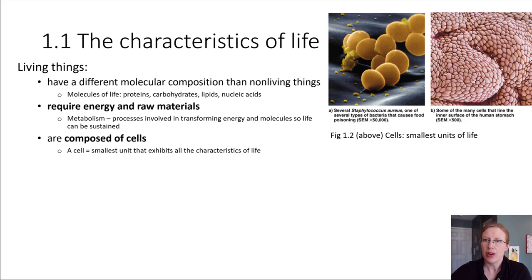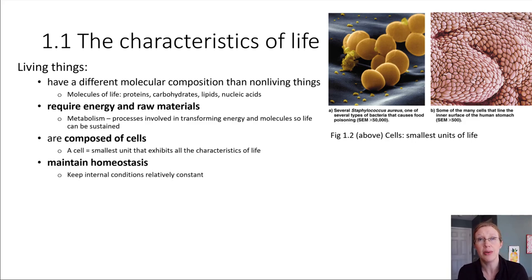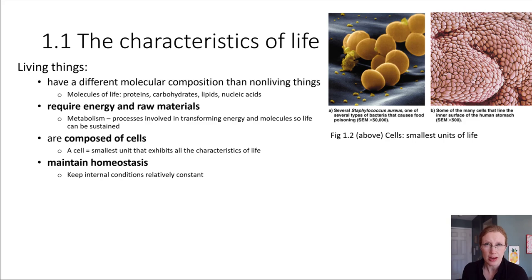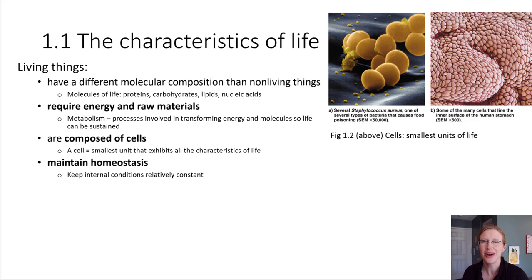All living things are able to maintain their internal conditions, and this is called homeostasis. This just means living things are able to keep things relatively consistent internally, even when the surroundings are in fluctuation. Using our own bodies as an example: if you go outside on a hot day or a cold day, your internal temperature stays pretty constant — you have kind of an internal thermostat. That's called maintaining homeostasis.